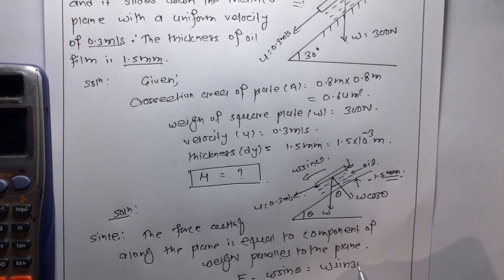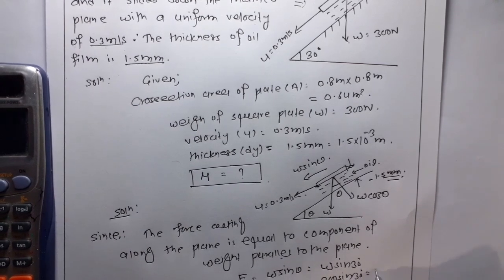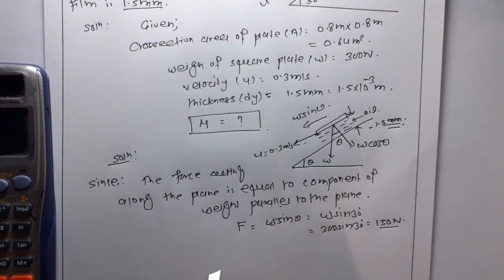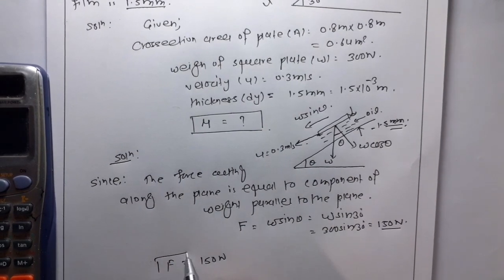That is W sin theta. So, W sin theta, theta is 30 degrees, so this is 300 sin 30, so this is 150 Newton, so our force is 150 Newton.